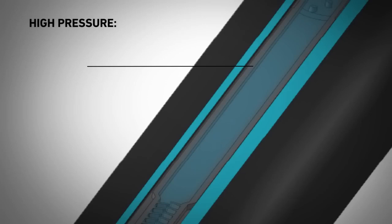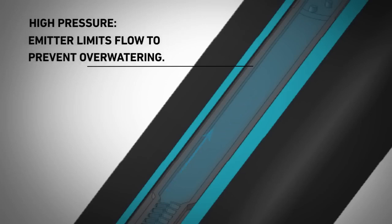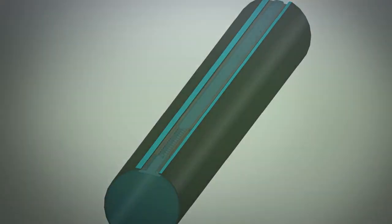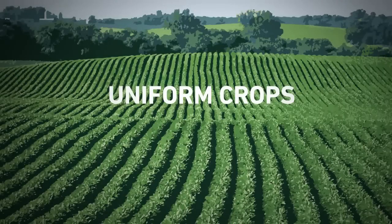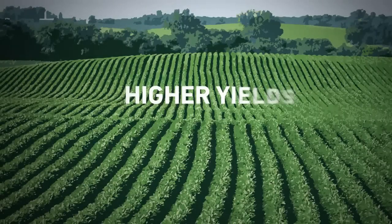Alternatively, where high pressure conditions occur, such as at the bottom of a hill or at the beginning of a long tape run, the pressure response section of the emitter limits flow to prevent overwatering. This results in a more uniform crop and higher yields in terrain that would otherwise be impractical to farm.